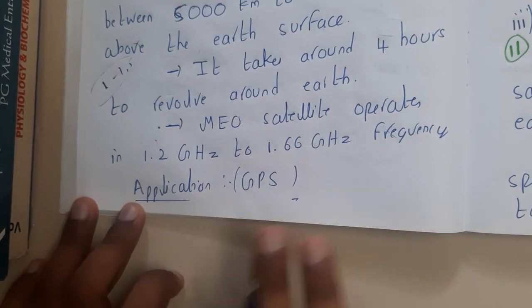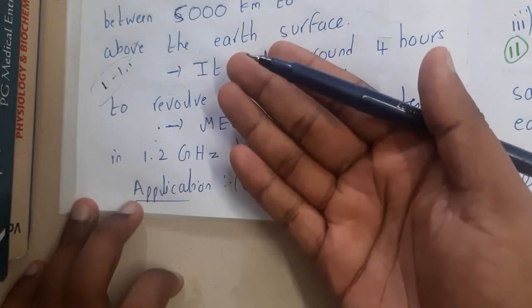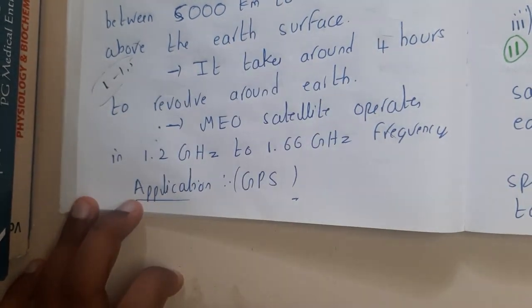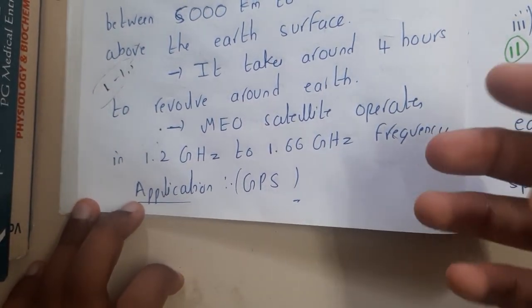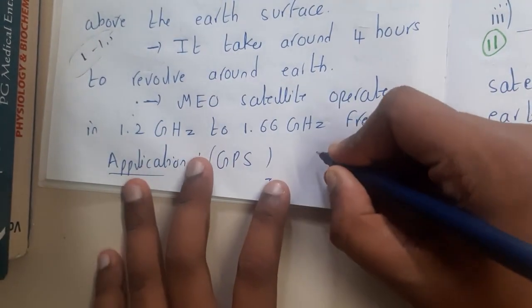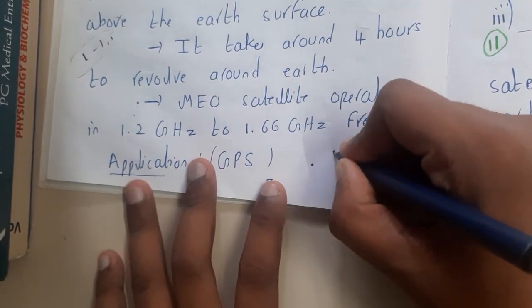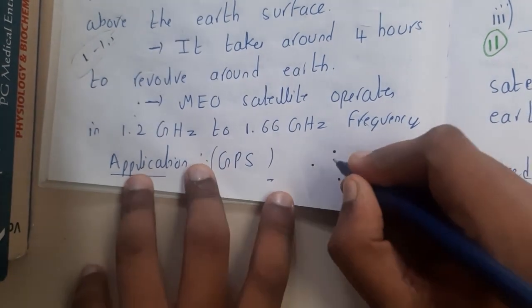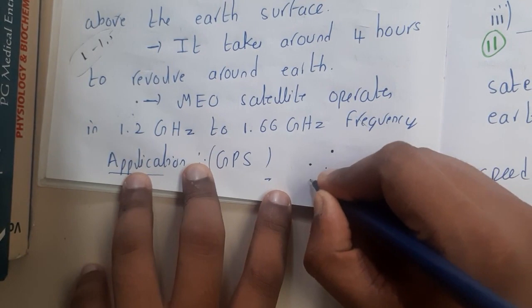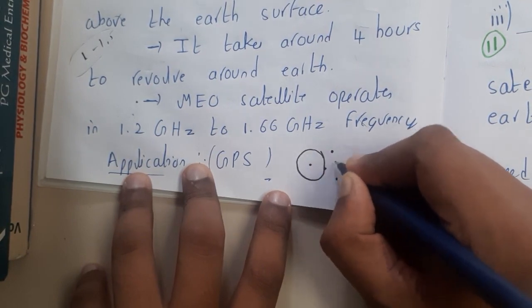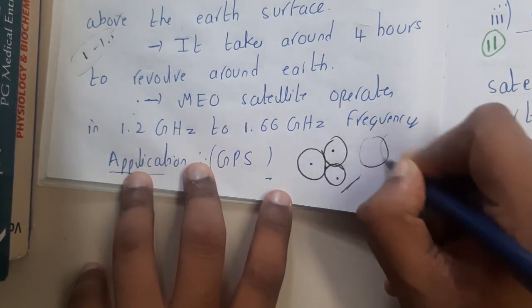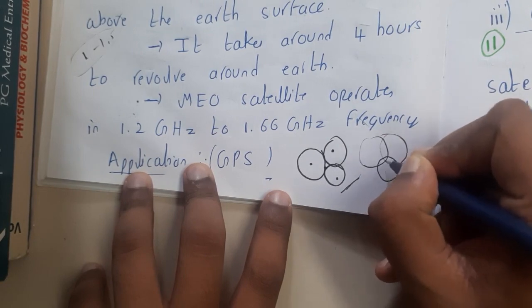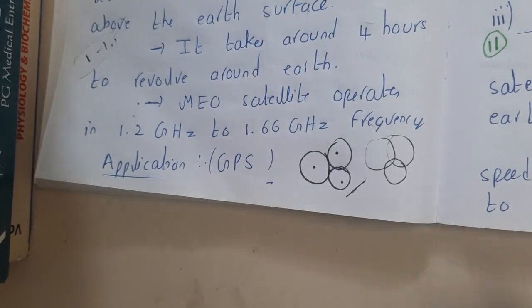The main application of MEO satellites is GPS. In our mobiles we use GPS for our exact location, like in Google Maps — this is enabled by MEO satellites. Basically, three satellites can determine your exact location: each satellite draws a range circle and the point where all three intersect is your exact location.